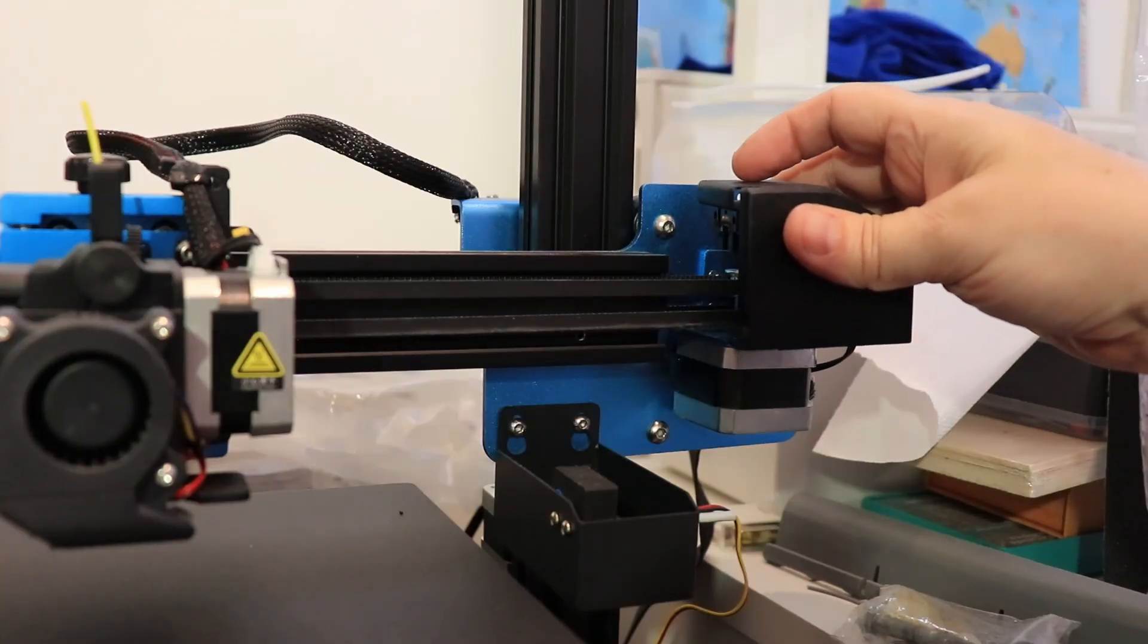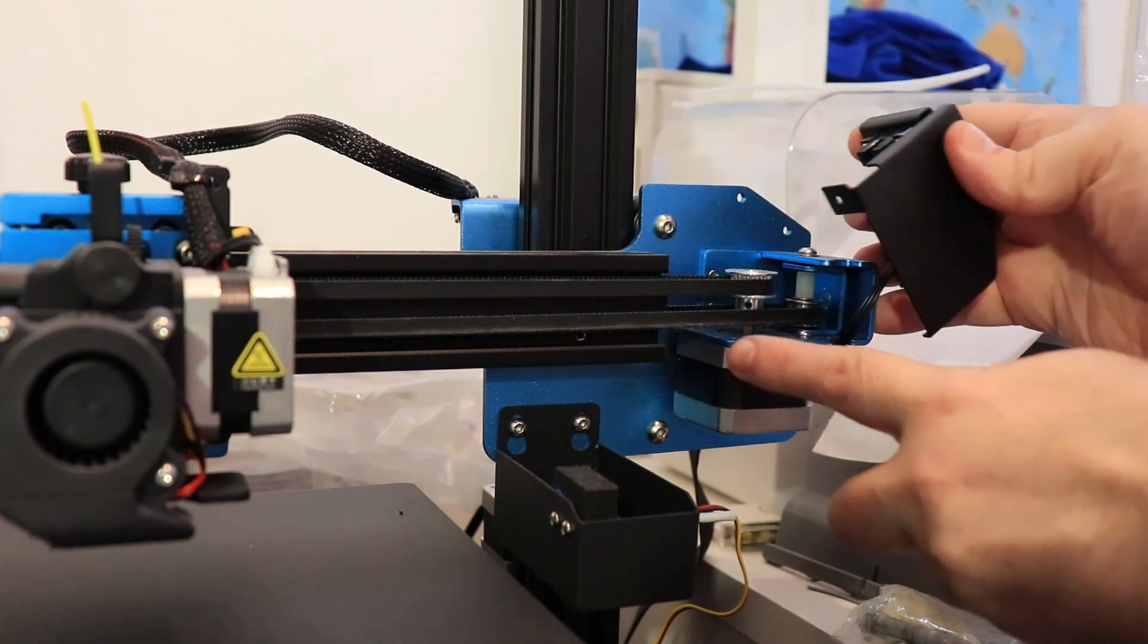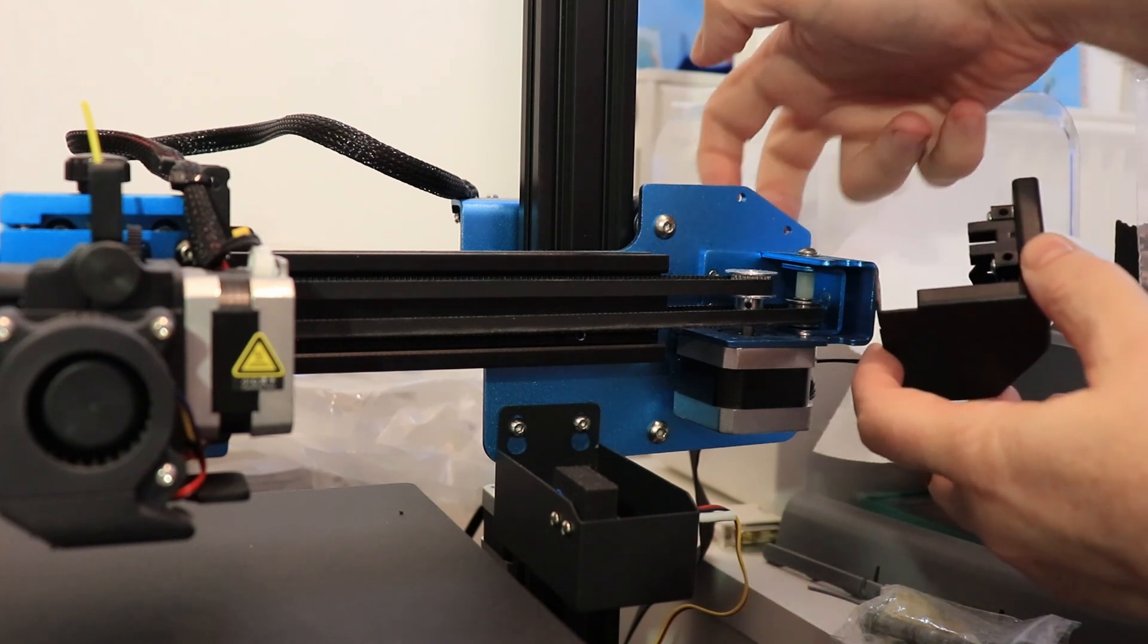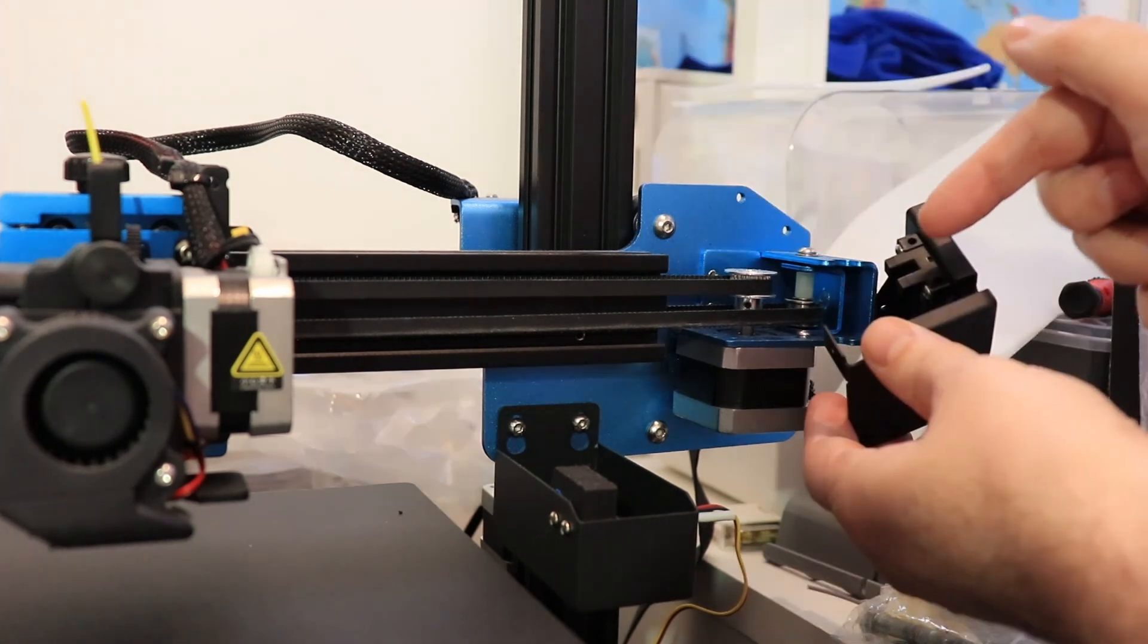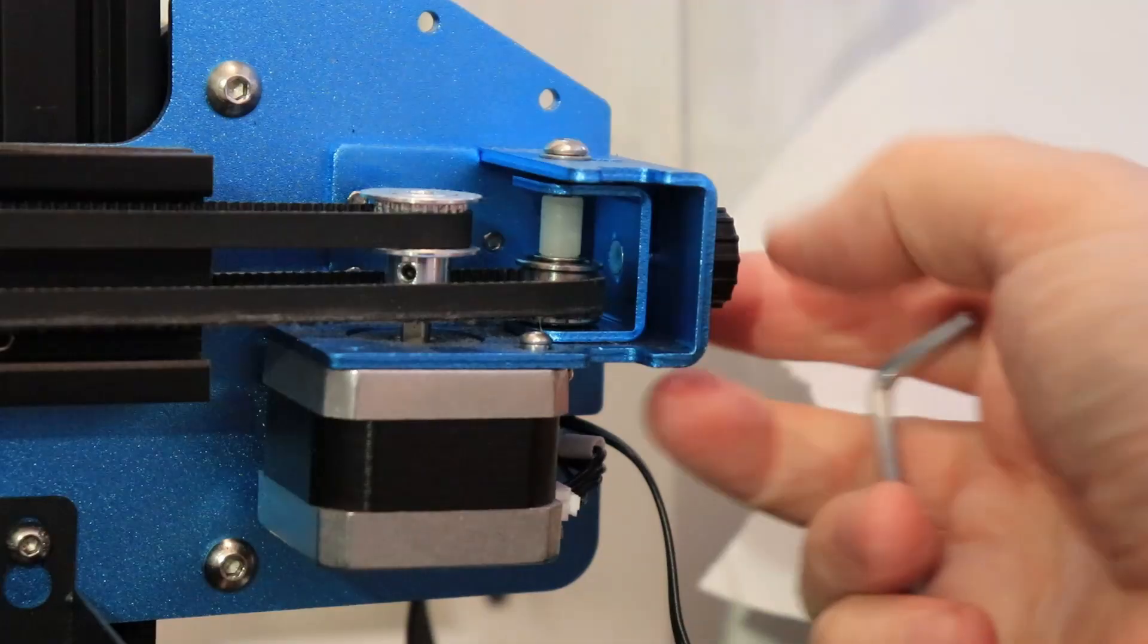So first I have to remove this shield. It's held by three bolts. One is here, screwed to this stepper motor corner, and the other two are screwed from the back side. There is also an optical limit switch for the second extruder, the X-axis. So what is my plan?